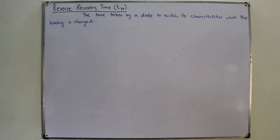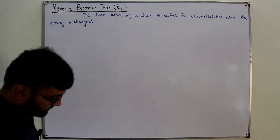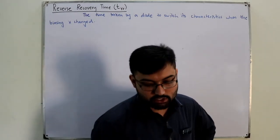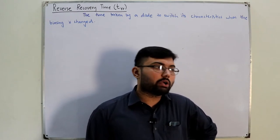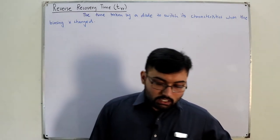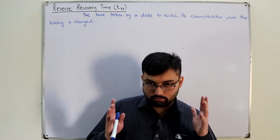The time taken by a diode to switch its characteristics when the biasing is changed. What do we mean by this? This means that when you switch from the forward bias to the reverse bias, or it could also be when you switch it from the reverse bias to the forward bias. But the book has only discussed one, so we would stick to one.